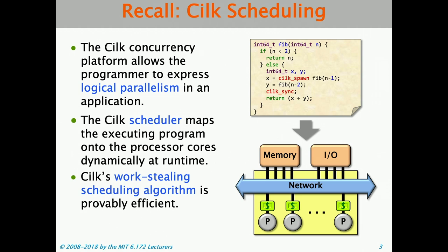What does Cilk do in light of those keywords? At a very high level, Cilk — and specifically its runtime system — takes care of scheduling and load balancing the computation on the parallel processors. After you've denoted logical parallelism using Cilk spawn, Cilk sync, and Cilk for, the Cilk scheduler maps that computation onto the processors dynamically at runtime. Cilk uses a randomized work-stealing scheduler, which guarantees that mapping is efficient.